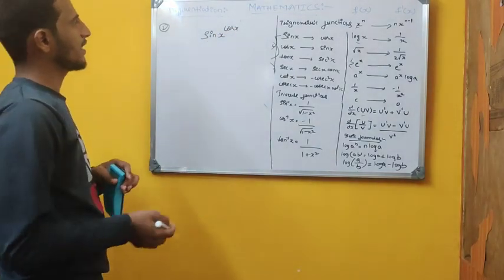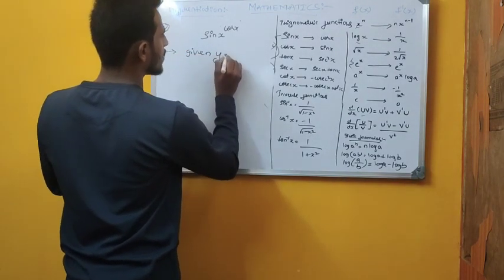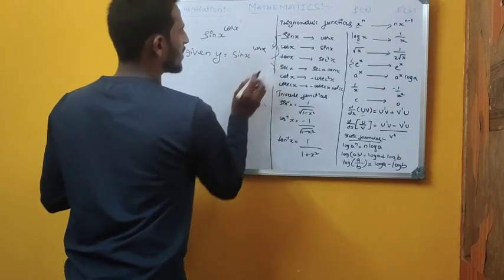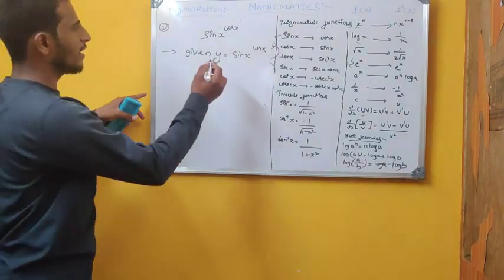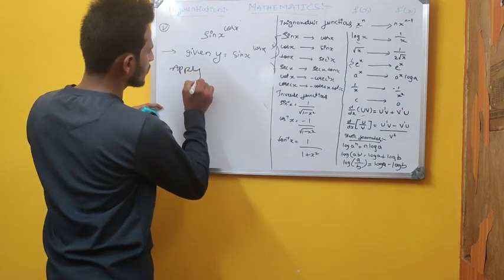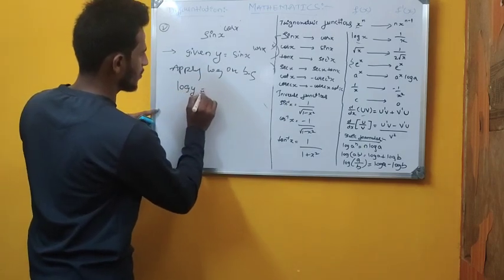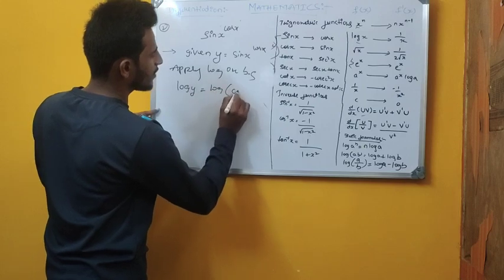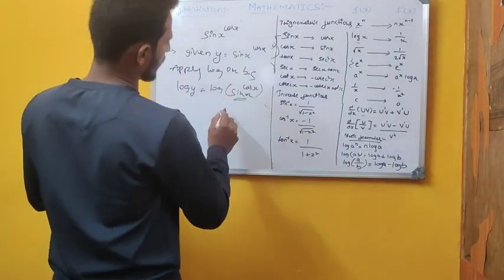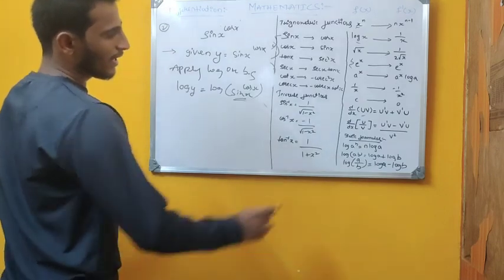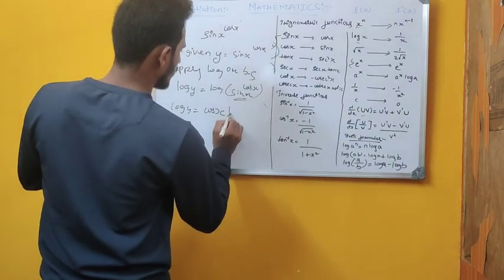Now the next example: given y = sin(x)^cos(x). This is the function y equals one function. We apply log on both sides: log y = log of sin(x)^cos(x). Using the log power rule log(a^n) = n·log(a), we get log y = cos(x)·log(sin x).